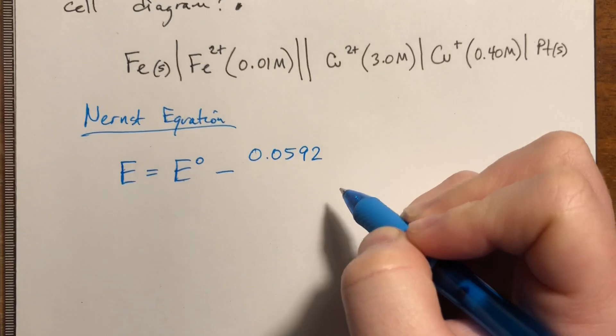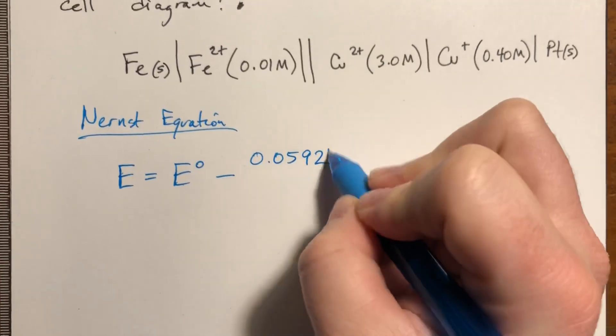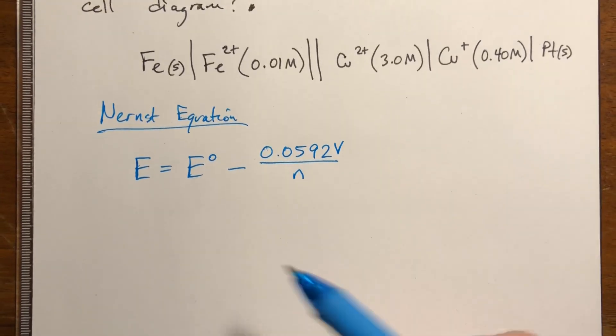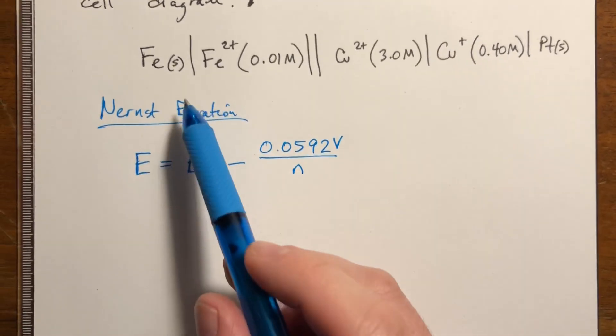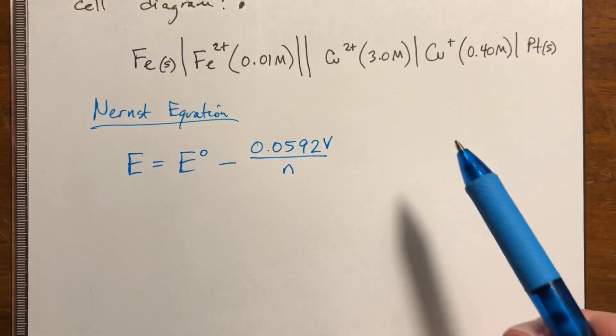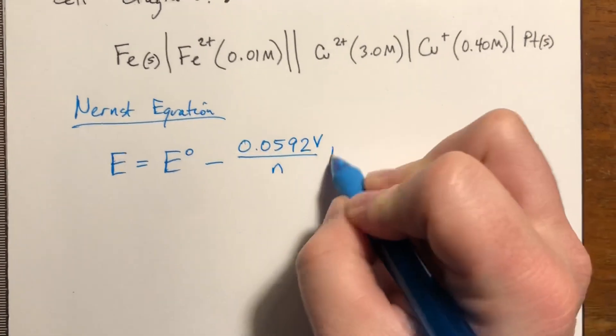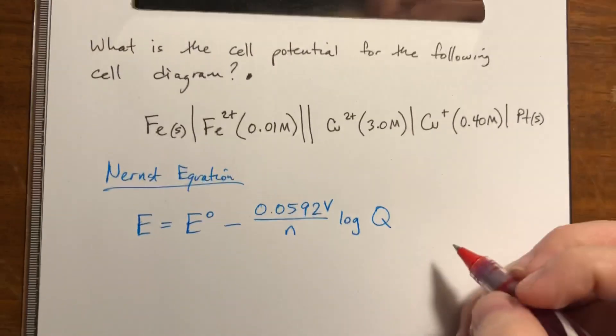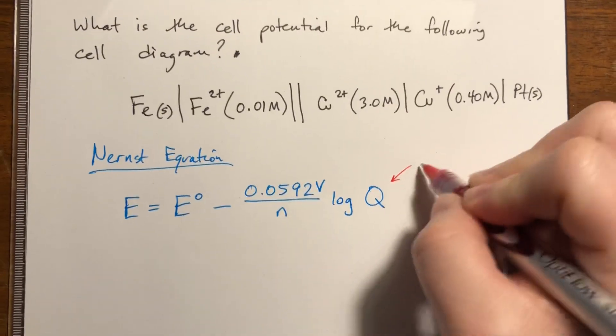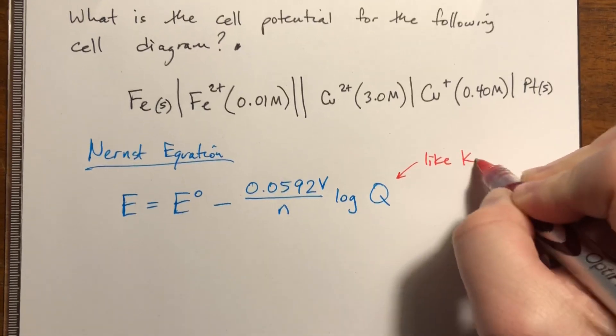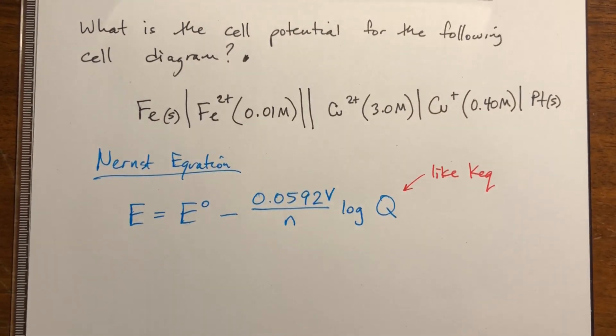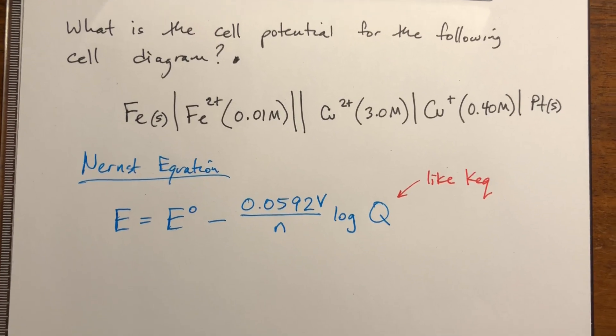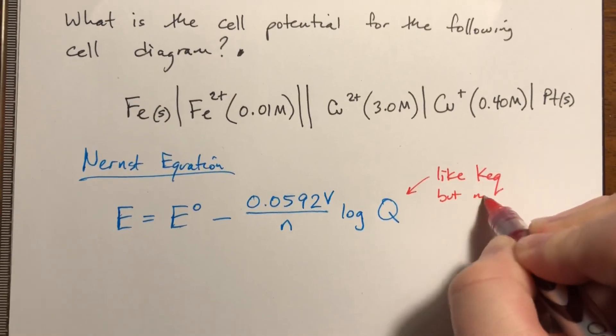So it's 0.0592 volts divided by N, which is the same N that we had in the previous set of problems, it's the least common multiple between the amount of electrons being transferred, times the log of Q. We haven't seen Q before, but we kind of sort of have. It's just like KEQ, so it's products over reactants raised to the coefficients. All the concentrations are in terms of molarity, all the pressures are in terms of atmospheres, but not at equilibrium.